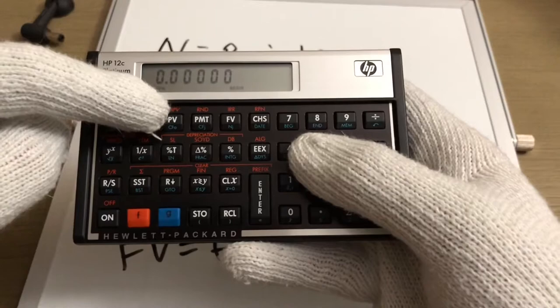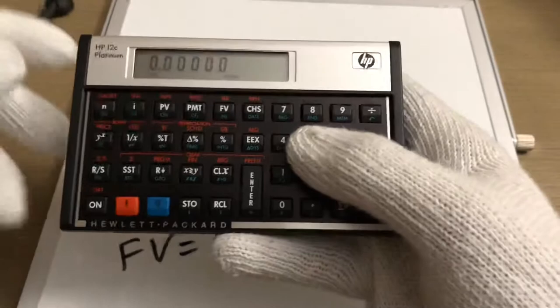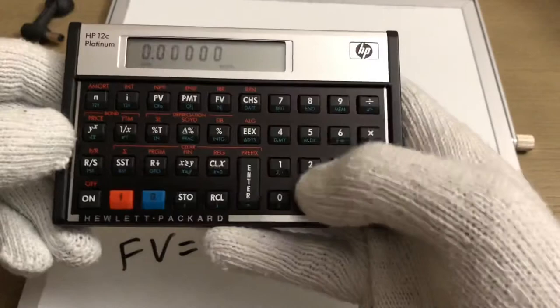PV is present value, PMT is your payment, and FV is the future value. So a quick example problem: let's say we're looking for the future value of a thousand dollars.